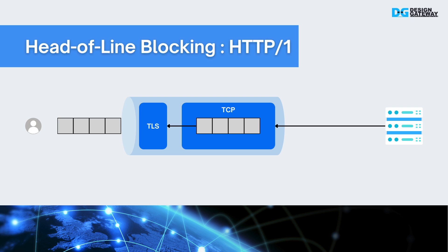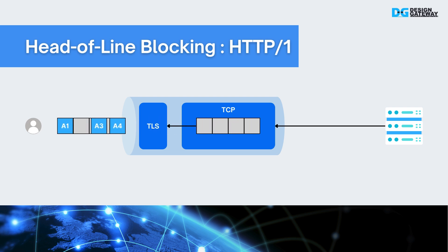Let's take a closer look at the head-of-line blocking issue. Head-of-line blocking in HTTP 1.1 occurs because it uses a single connection for multiple requests. When a client sends several requests, the server must respond in order. If one response is delayed, all subsequent responses are blocked, leading to slower performance and inefficient use of the connection, especially in high-latency or unreliable networks.